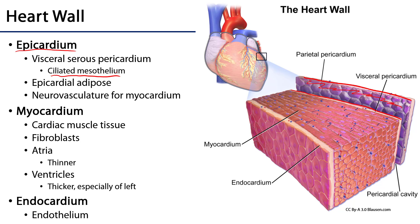Deep to that epicardium is the thickest layer of the heart. It will be thicker in the ventricles versus the atria, and it will be thicker in the left ventricle versus the right ventricle, and this is the myocardium. The myocardium is predominantly comprised of cardiac muscle tissue, which is a fantastically interesting type of tissue.